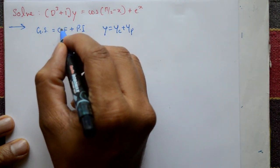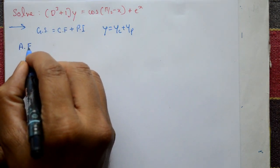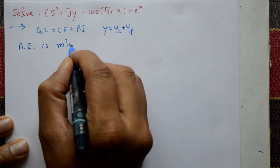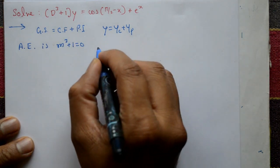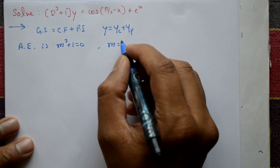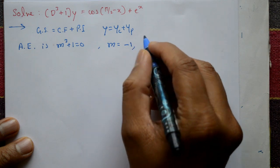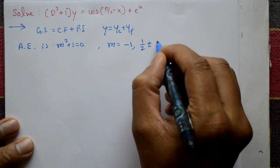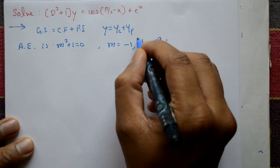First find the complementary function. This equation gives auxiliary equation m³ + 1 = 0. Using a calculator, we get roots: m = -1, and the second roots are 1/2 ± (√3/2)i, which are complex roots.